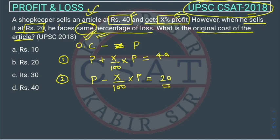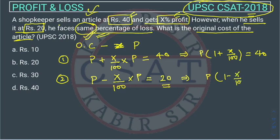Now we solve these equations. Equation 1 becomes: p times (1 + x/100) = 40. Equation 2 becomes: p times (1 − x/100) = 20. To solve, divide equation 1 by equation 2.